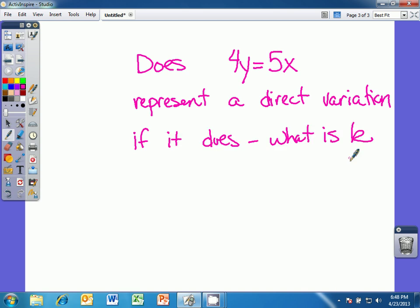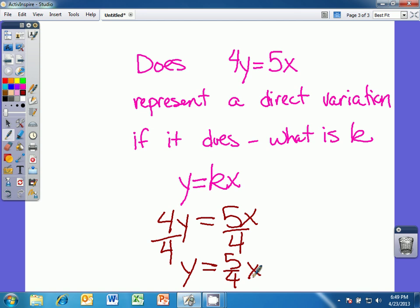So we need to get 4y equals 5x into the form y equals kx. We're going to try to manipulate the equation and get the y all by itself. So in other words, what do I do to remove the coefficient 4 in front of the y? I'm going to divide by 4. And so I have y equals 5 fourths x. Yes, this fits into that pattern, and 5 fourths is k. So yes, this is a direct variation function.